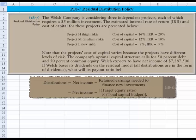Note that the project's cost of capital varies because the projects have different levels of risk. That should make sense. The company's optimal capital structure calls for a 50% debt level and a 50% equity level. Welch expects to have net income of $7,287,500.